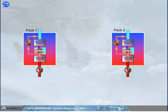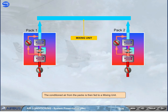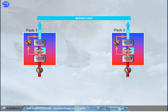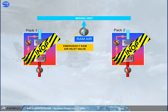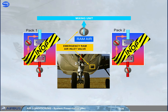The conditioned air from the packs is then fed to a mixing unit. In case of failure of both packs, ram air is provided via an emergency ram air valve. We will look at the use of ram air in the failure cases module.